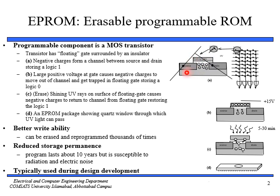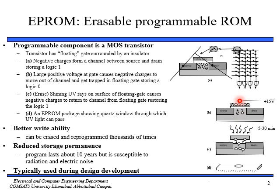Between source and drain there is a channel, and in this channel logic one is stored. We can have many combinations of this unit, so a line shows a word and a vertical line shows data, giving us an m-cross-n memory array. If we apply a large positive voltage — like 15 volts — at the gate, the negative charges will get out of the channel and get trapped in the drain, storing logic zero. This is how we program it with ones and zeros.